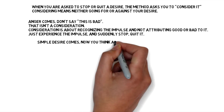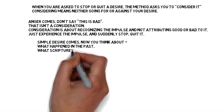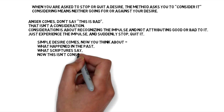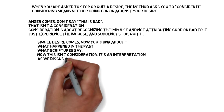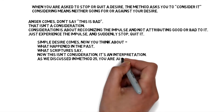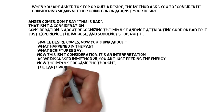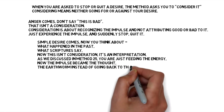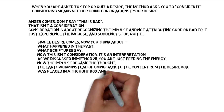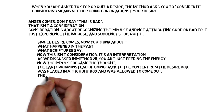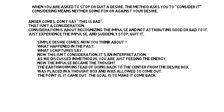A simple desire comes and you think about what happened in the past, what scriptures say — that isn't a consideration, it's an interpretation, as discussed in Method 25. You are just feeding the energy; now the impulse became a thought. The earthworm, instead of going back to the center from the desire box, was placed into a thought box and allowed to come out. The point is it came out — the goal is to make it come back.